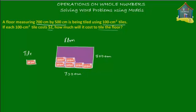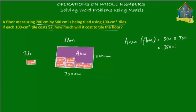You have to use these pink tiles to cover the floor which measures 700 centimeters by 500 centimeters. First, find the area of the floor, because to find how many tiles you need you must know the total area. The area of a rectangle is its length multiplied by its width, so the area of the floor equals 500 centimeters by 700 centimeters, which equals 350,000 centimeters square.